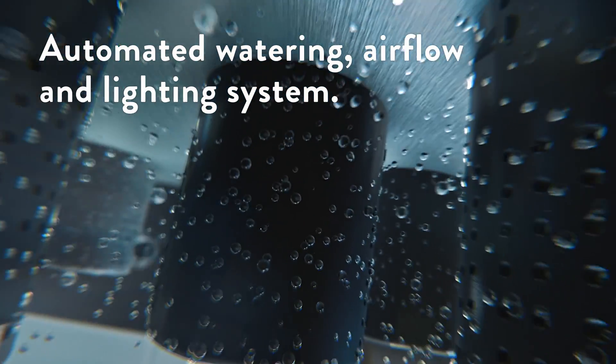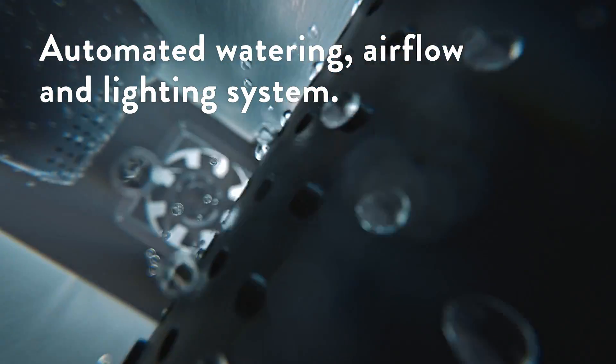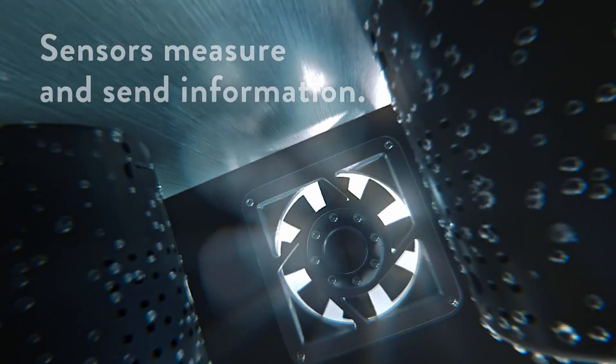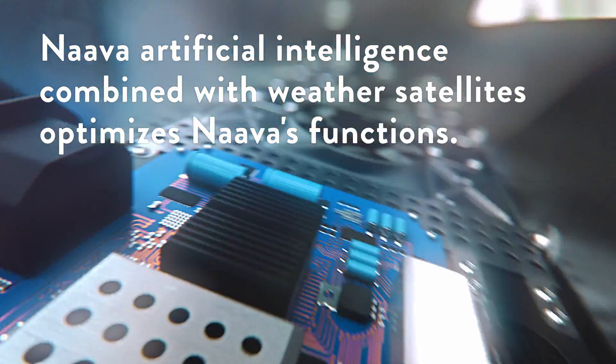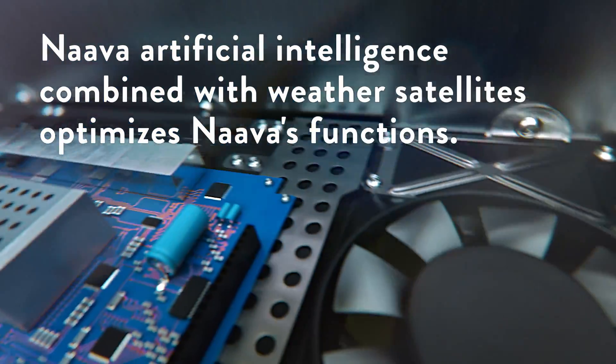NAVA has a fully automated watering, airflow and lighting system. Sensors measure and send information about your indoor air. Then NAVA's artificial intelligence, combined with weather satellites, optimizes your NAVA right where you are.